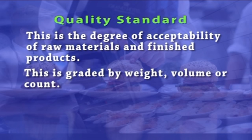It is possible to review the actual performance of production and selling departments to know whether the goals set were met or not. Analysis of the reasons for not meeting the standards will bring appropriate changes in the operating procedures so that performance in the future will be according to the standards set. Quality standard: this is the degree of acceptability of raw materials and finished products, graded by weight, volume or count.